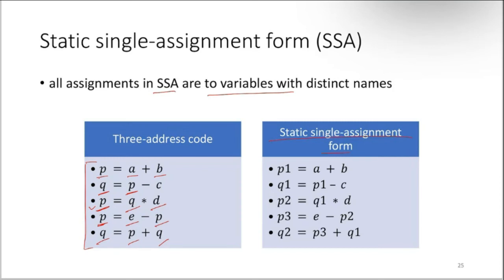What happens here is it creates instances of this variable. Instead of using p everywhere, it creates p1, p2, p3. It keeps the variables separately.